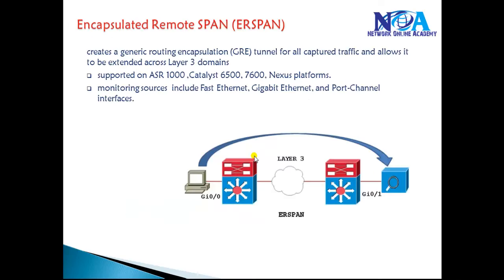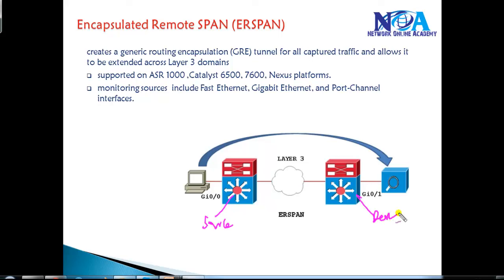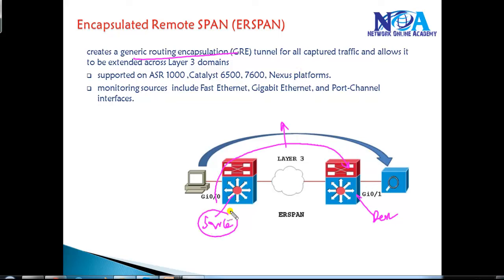When you talk about Encapsulated Remote SPAN, the source is in a different network and the destination is on a different network, and the port mirroring is happening over a Layer 3 routed network. By using GRE encapsulation, that's the reason we call it Encapsulated Remote SPAN. ERSPAN creates a GRE tunnel for all the captured traffic from the source.